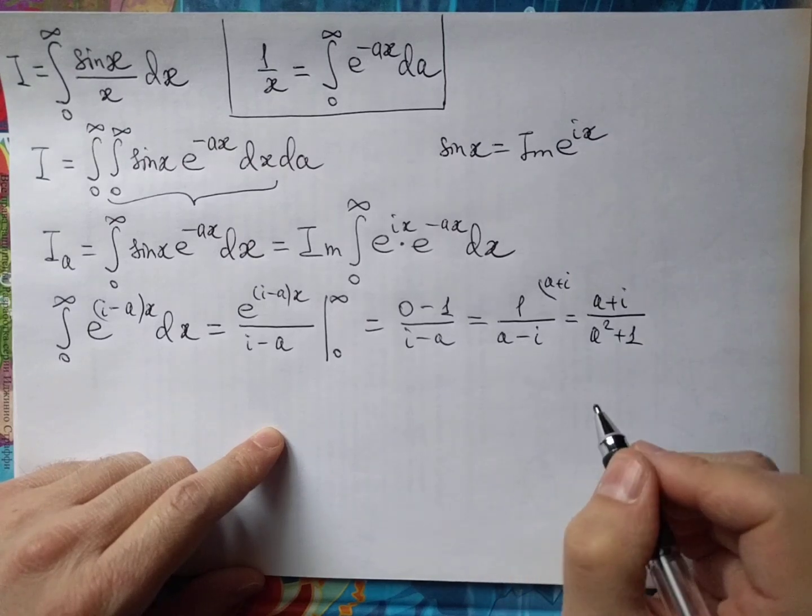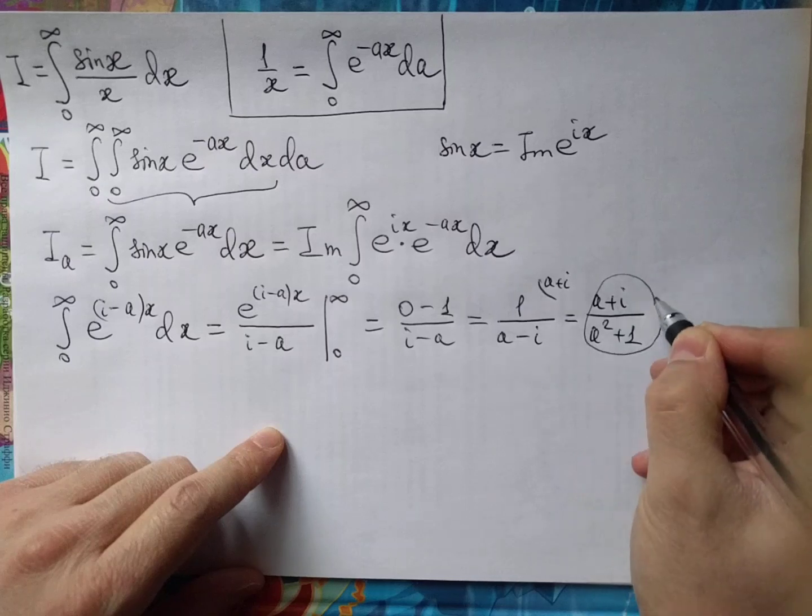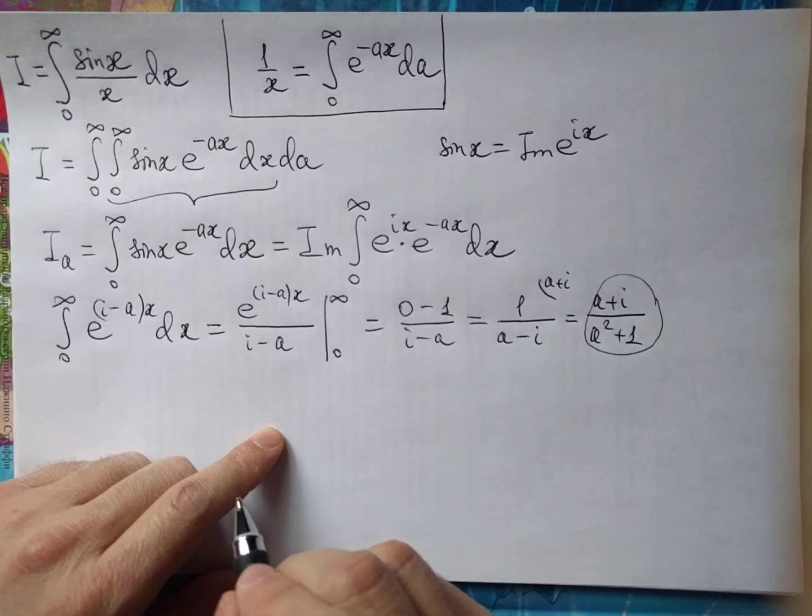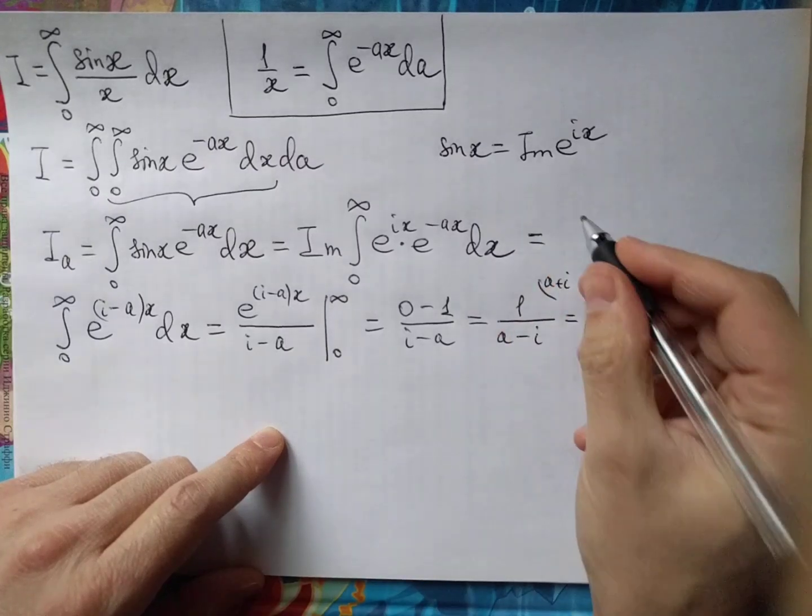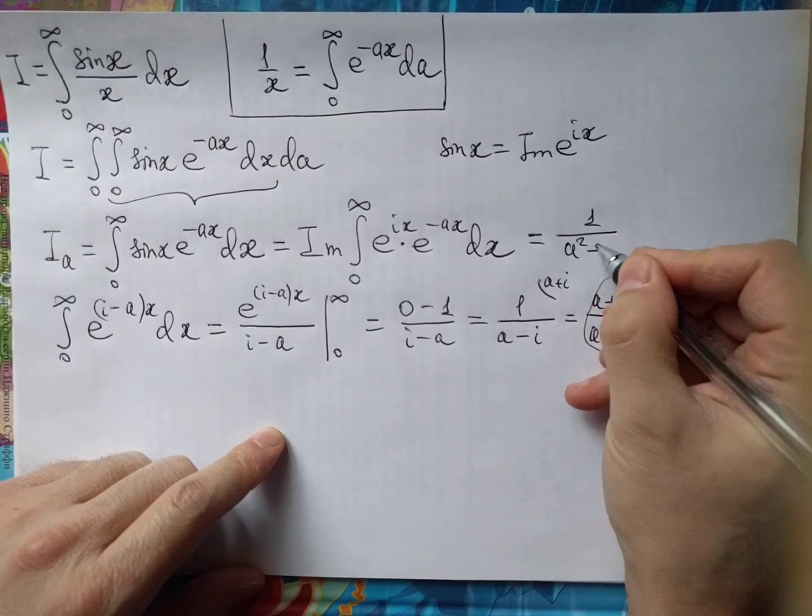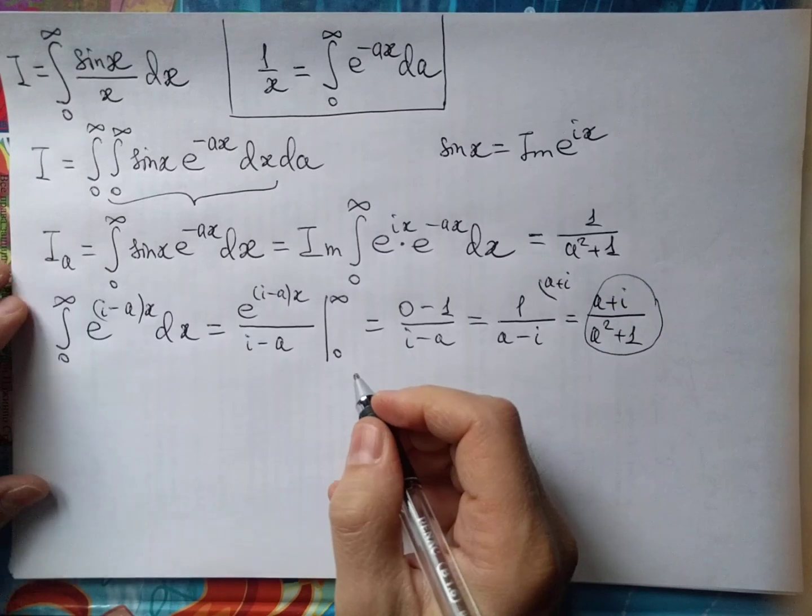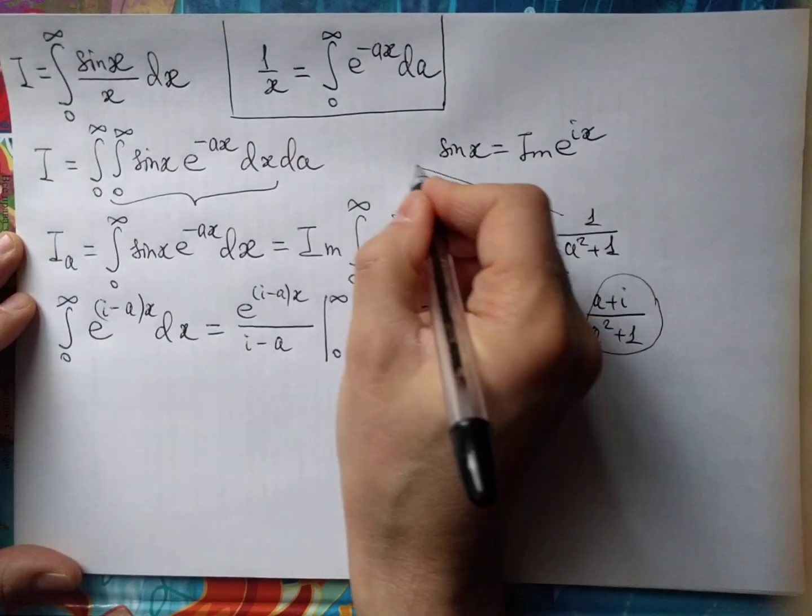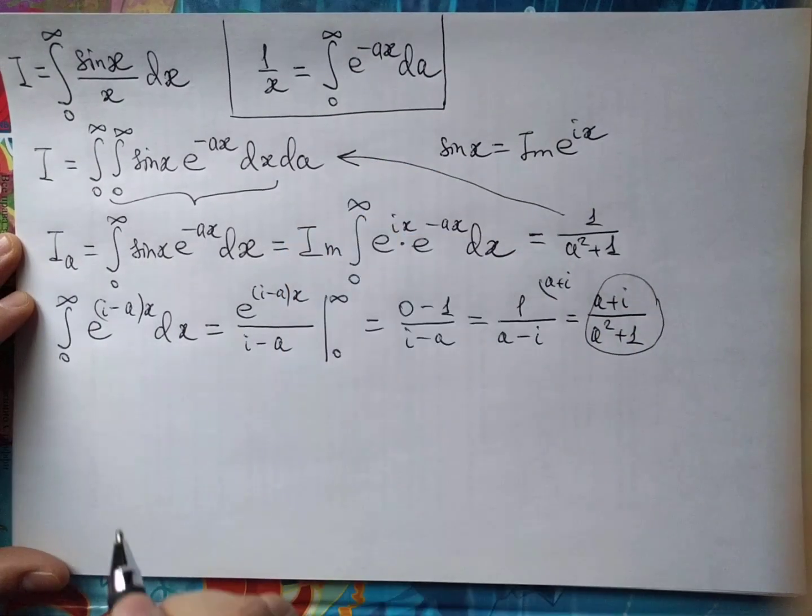So we need the imaginary part of this fraction. Put it here, and this is 1 over a squared plus 1. And then we put this expression to evaluate the final result.